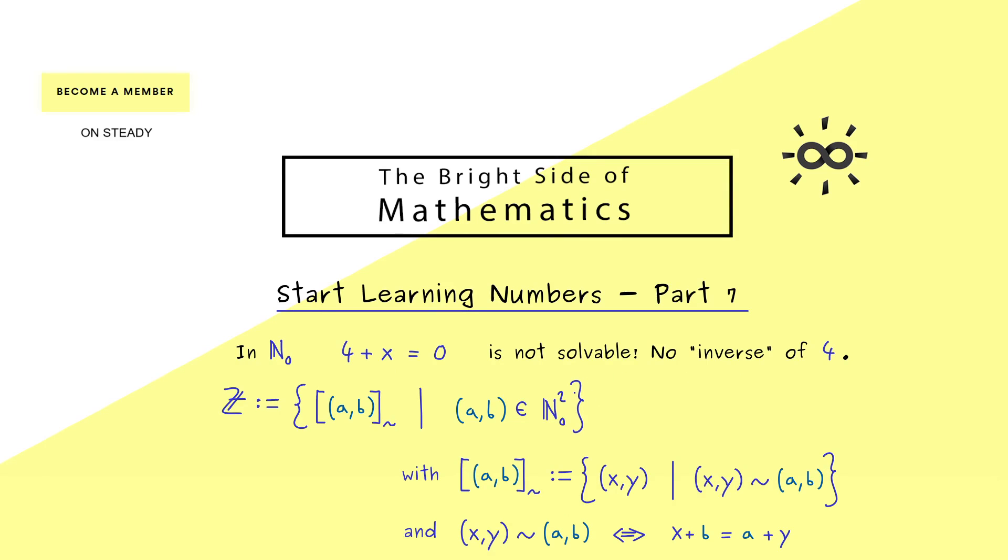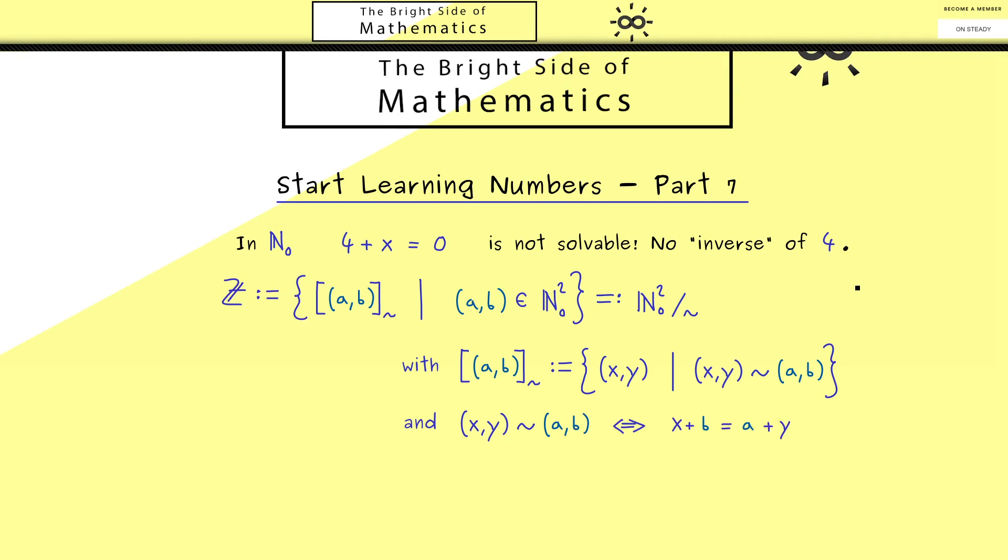Now I should also tell you for the set of all equivalence classes there is a common notation one uses. One takes the original set, which is N₀ squared here, and divides by the equivalence relation. And one reads that as modulo tilde. Later you will see why this is indeed a useful notation.